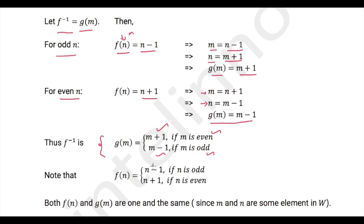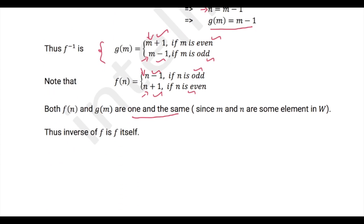Also, the given function is f(n) = n − 1 if n is odd, and n + 1 if n is even. Look at the similarity: n − 1 if n is odd corresponds to m − 1 if m is odd; n + 1 if n is even corresponds to m + 1 if m is even. These are one and the same function, and hence the inverse of f is f itself.